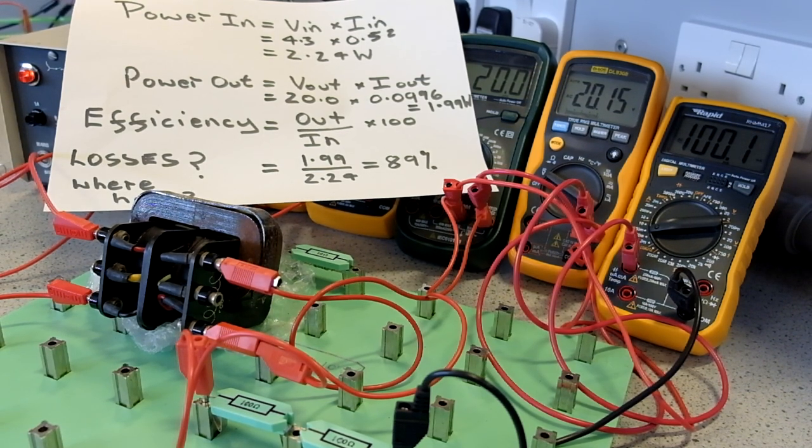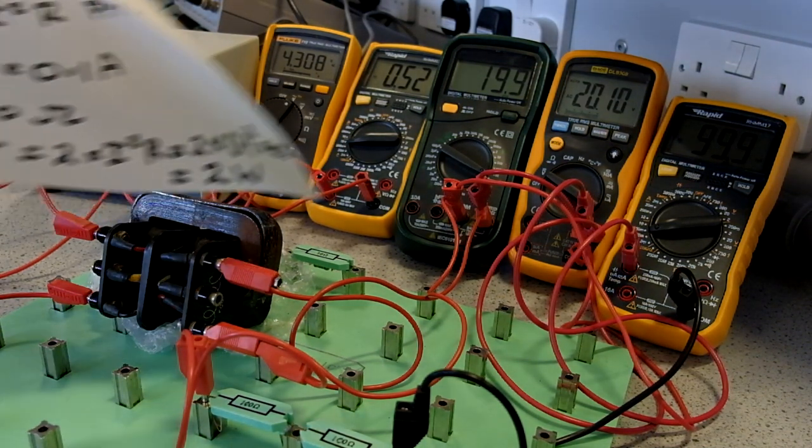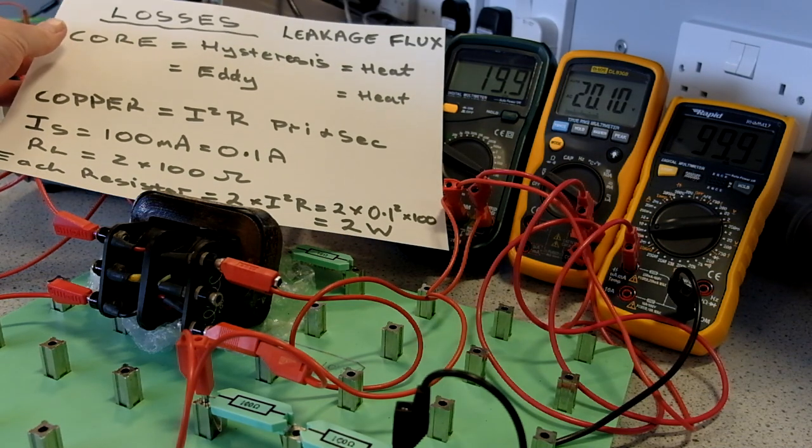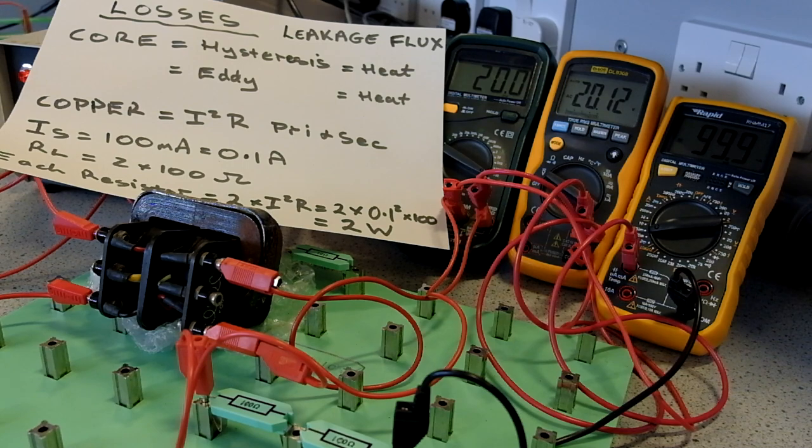So where do those losses come from? As discussed, losses in the system: we have core loss of hysteresis, which is a non-linear effect in the core in terms of magnetizing and demagnetizing, results in heat loss. We have currents induced in the metal core. We can minimize them by laminating the core, but we will have eddy current, so that results in heat loss.